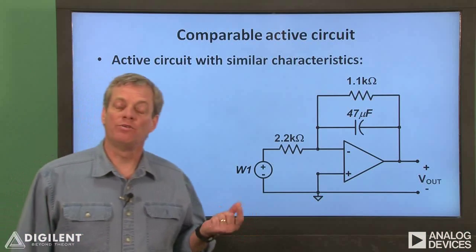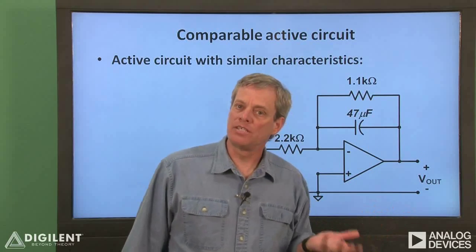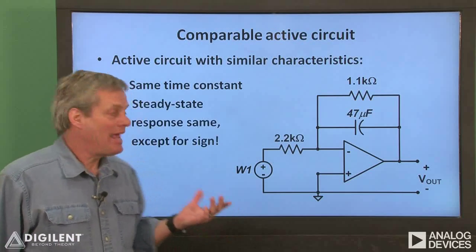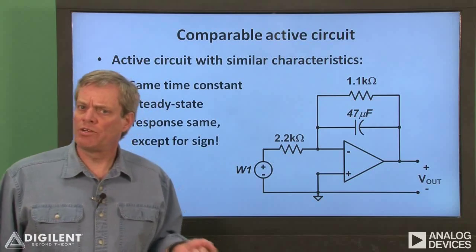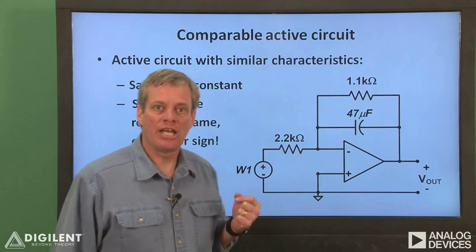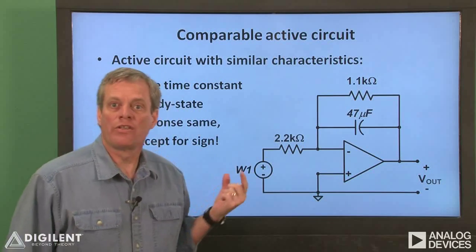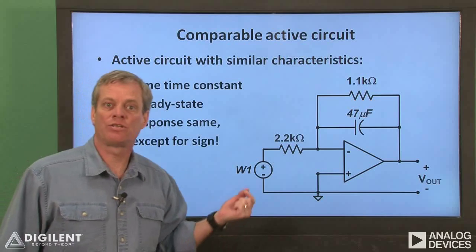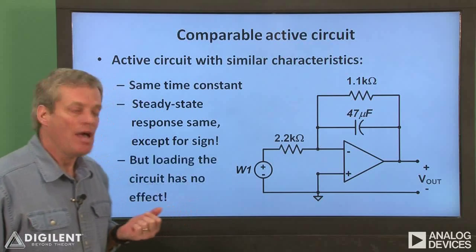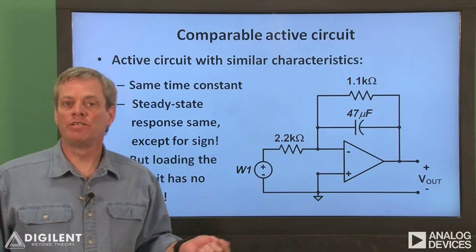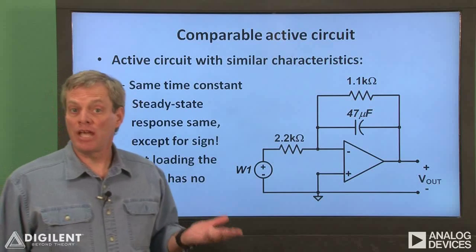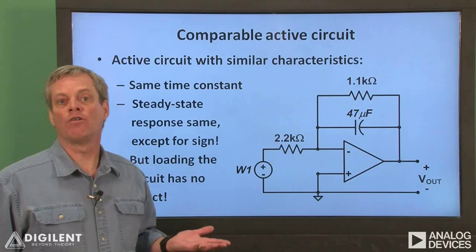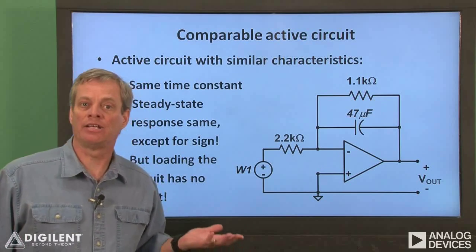We can alleviate these loading effects by using an active circuit. This circuit has a very similar response to our previous passive circuit. The time constant of this circuit is identical to the previous circuit, and the steady state response is close to the previous circuit. This circuit does, however, change the sign on the output so that a negative input step from 0 volts to negative 5 volts results in the same response as the previous circuit to a positive 5 volt step input. However, if we load this circuit with the same resistor we used in our previous example, our measured response doesn't change significantly. So, if we use this circuit to provide power to the load, we don't have to account for the load if we design our circuit to give us the desired time constant and final voltage.